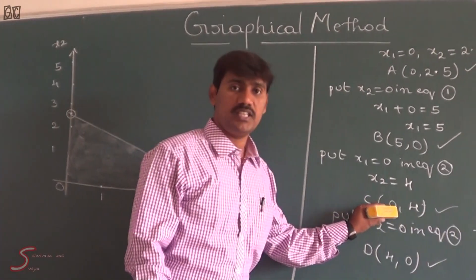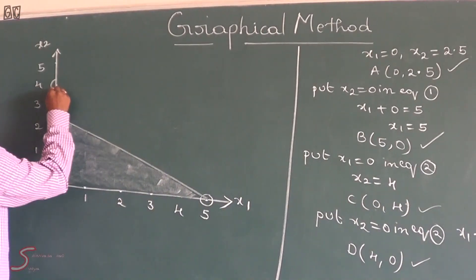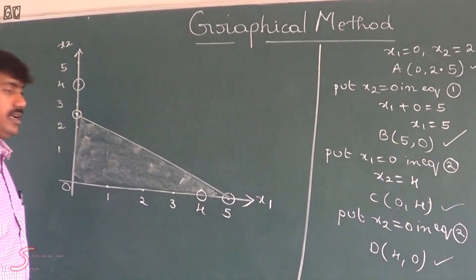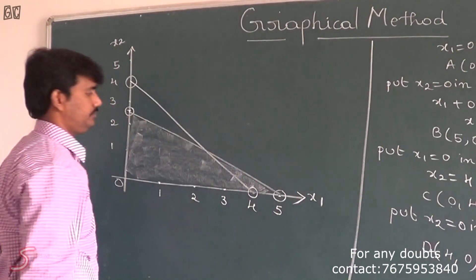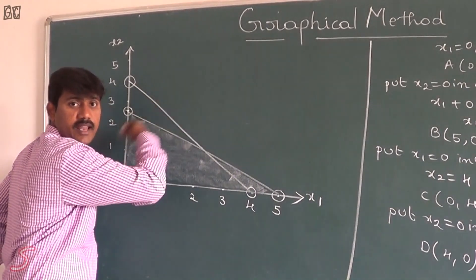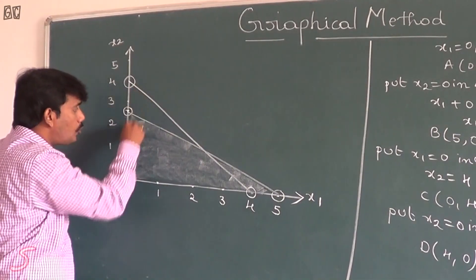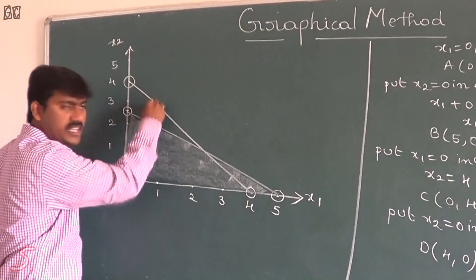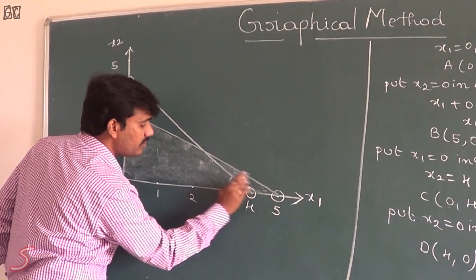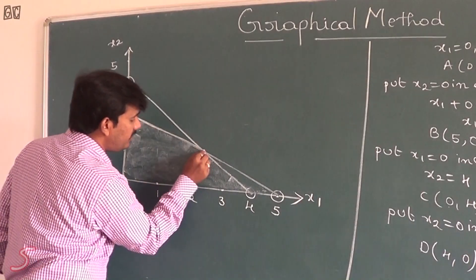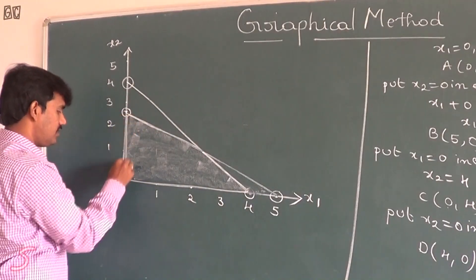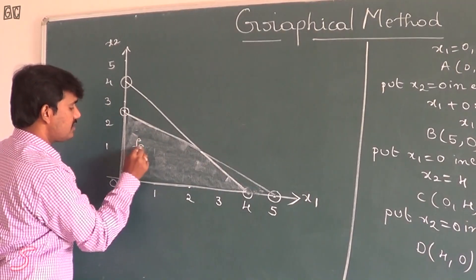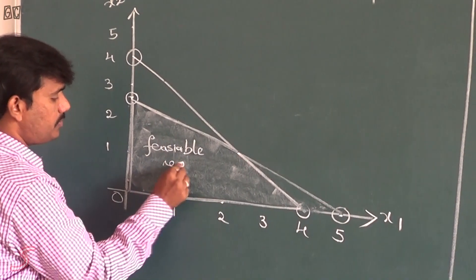We have one more line: x1 is 0, x2 is 4, and the point x1 is 4, x2 is 0. This is also in the form of less than or equal to type, so the region is towards the origin. If I plot both regions towards the origin, there is a common region — it is called the feasible region. The common area for these two lines will be the feasible region.